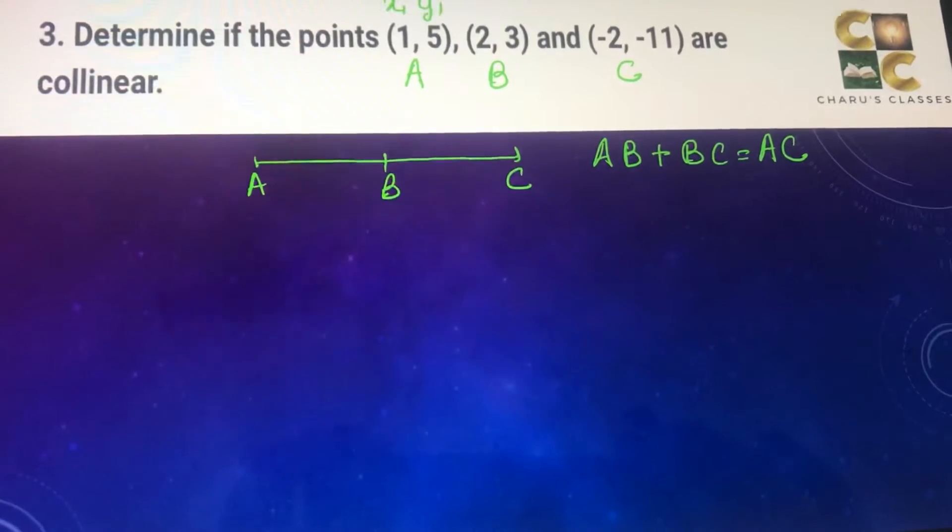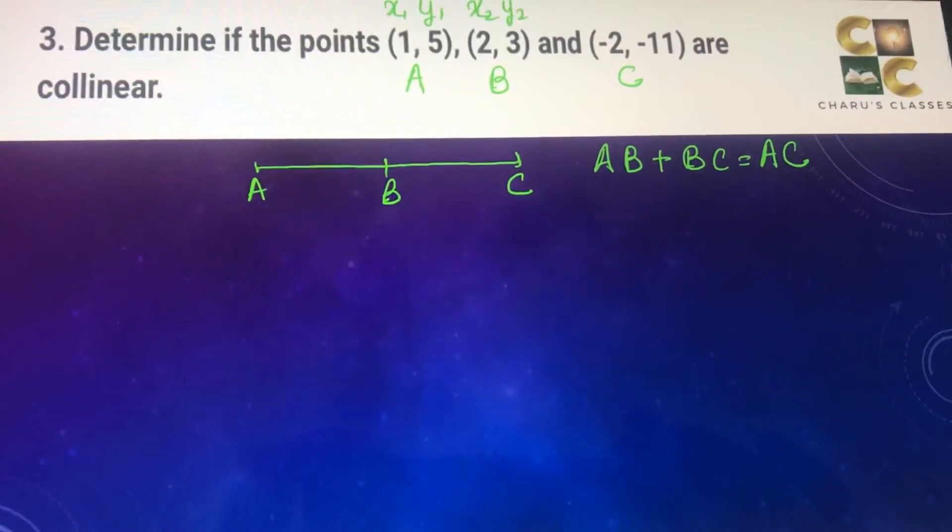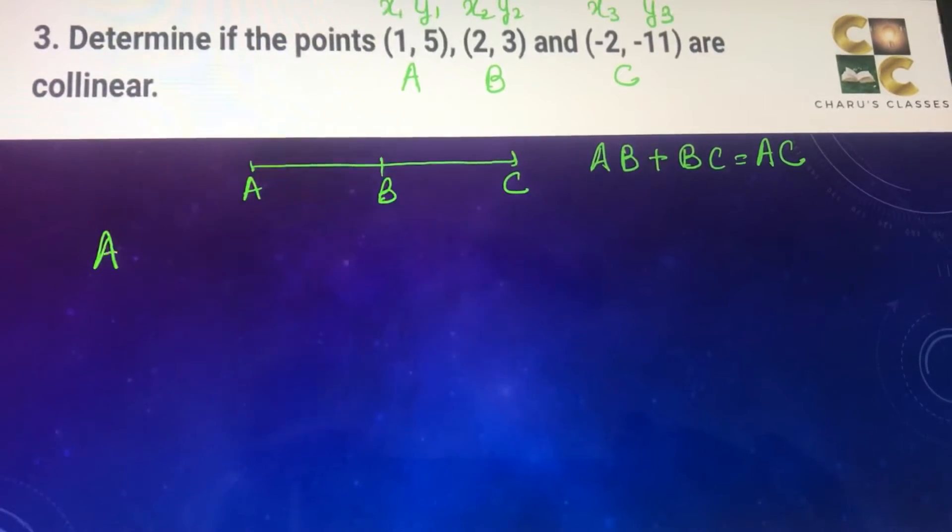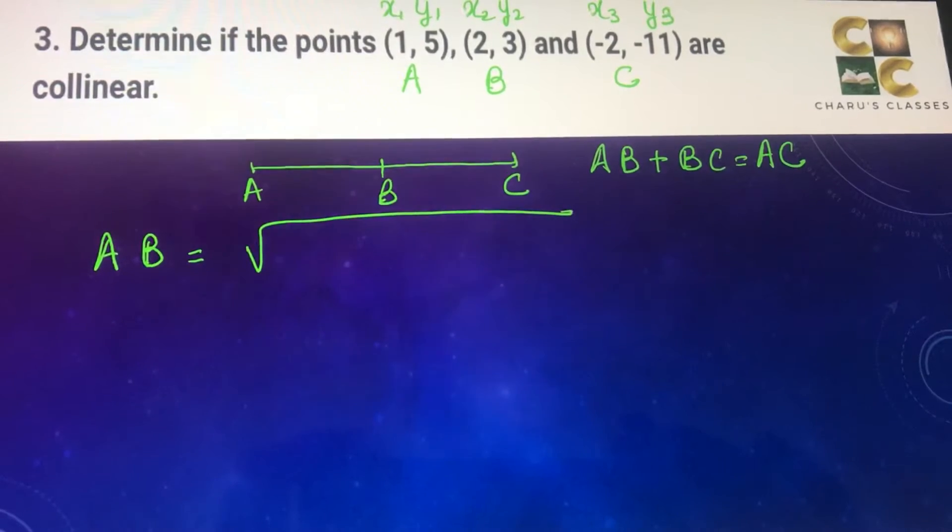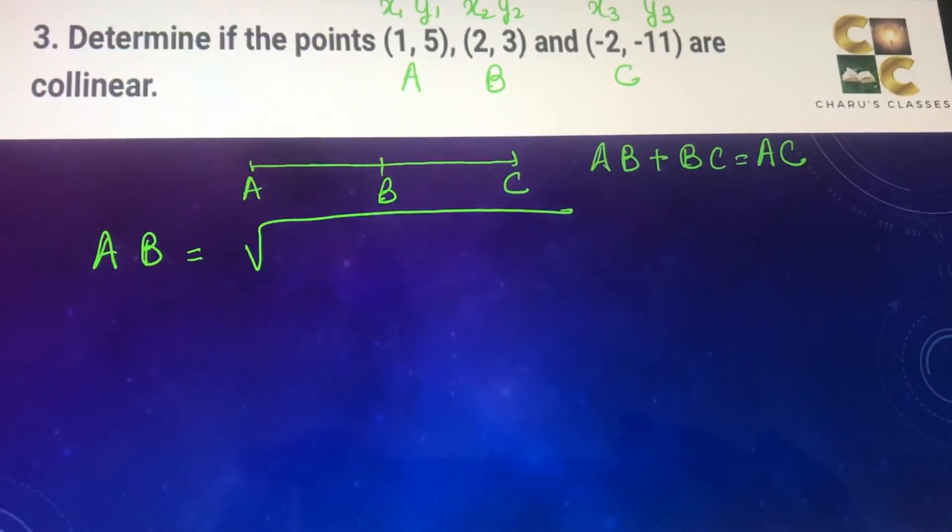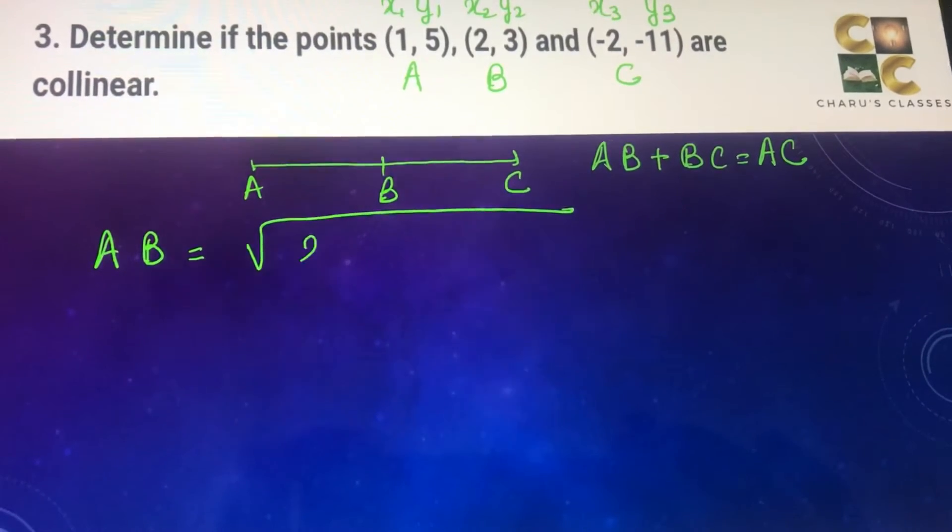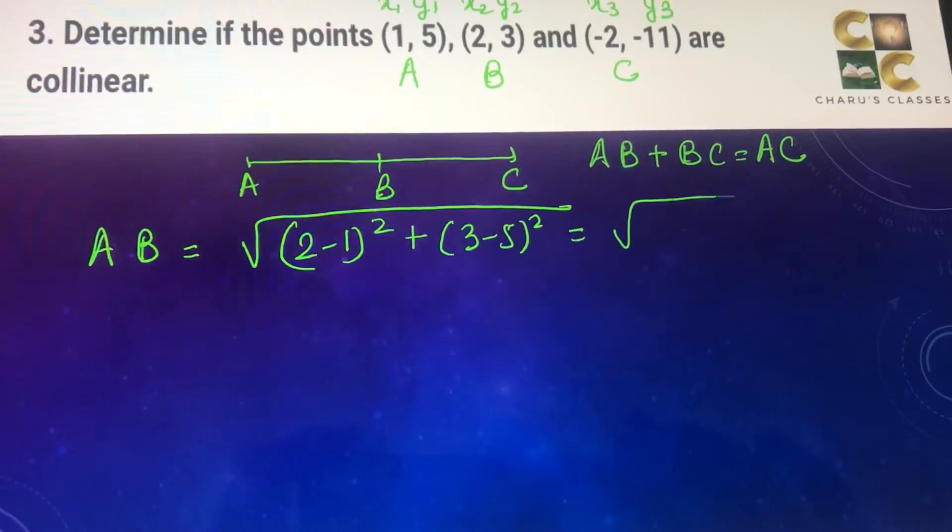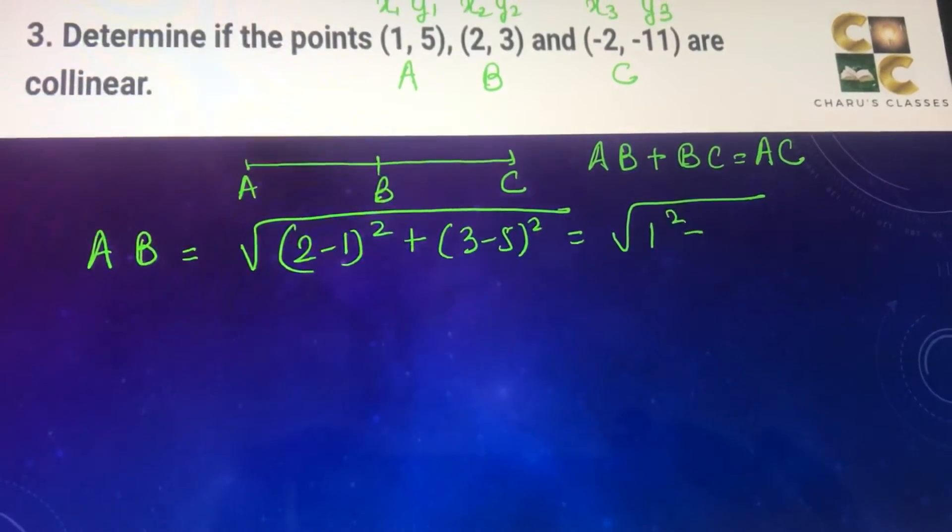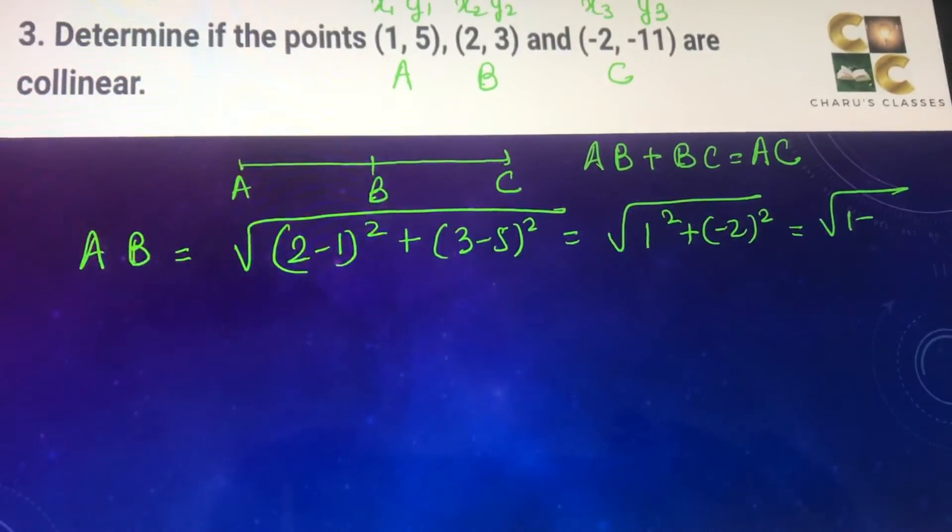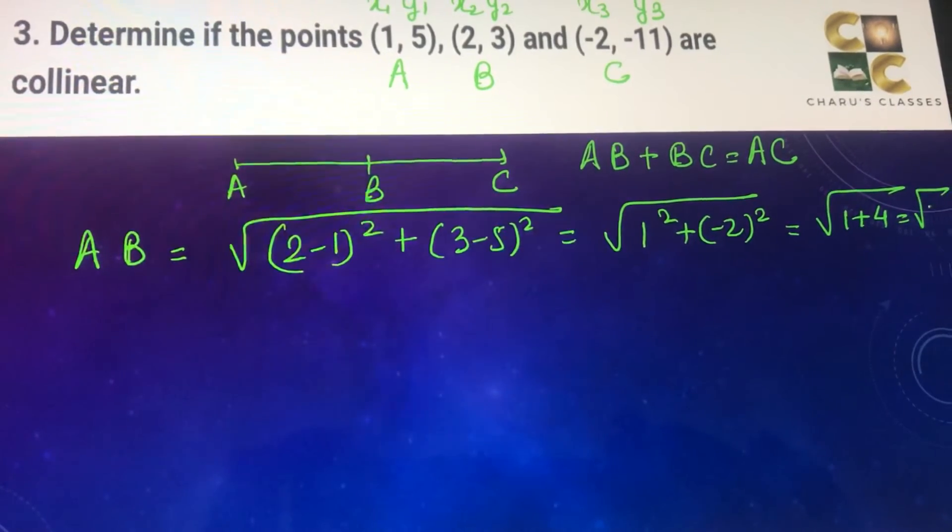Let's call them x1, y1, x2, y2 and x3, y3. So let's first find AB. AB is equal to square root of (x2 - x1)² plus (y2 - y1)². So that is (2 - 1)² plus (3 - 5)². This is root of 1² plus (-2)², which is root of 1 plus 4, that is root 5.